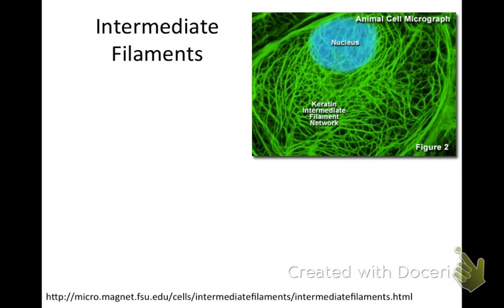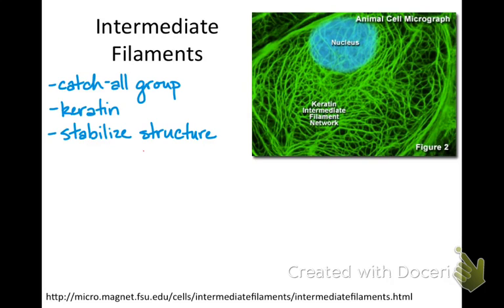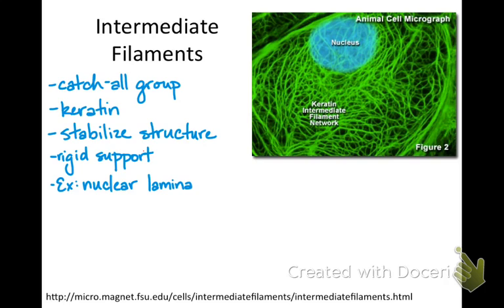The intermediate filaments are our second cytoskeletal group, and they're really the catch-all group. They are intermediate in size and often involve a monomer related to the keratin family of proteins, just like our hair and fingernails. These fibers stabilize the cell structure and resist tension or compression — really any movement or pressure of any kind. They give us a lot of our outer structure close to the surface of our skin. The nuclear lamina is also an intermediate filament, and intermediate filaments remind me the most of our actual skeleton.